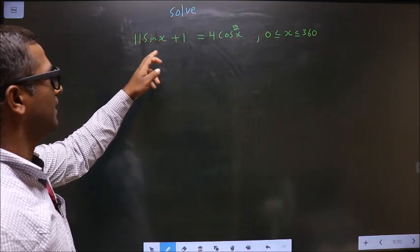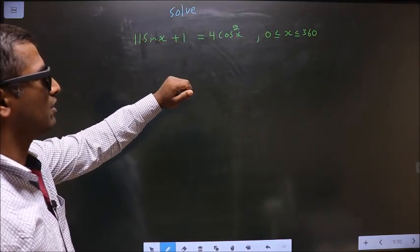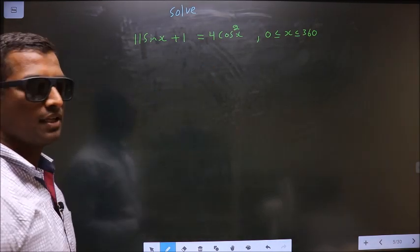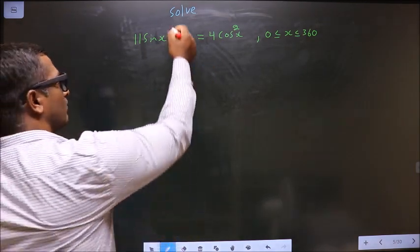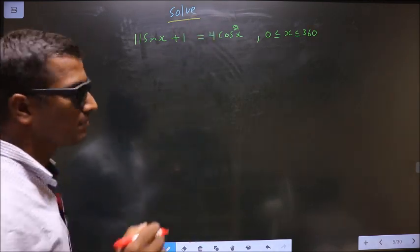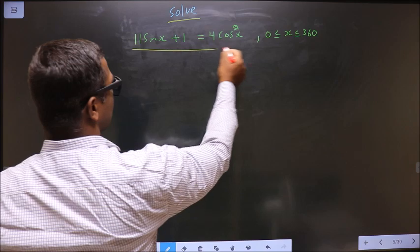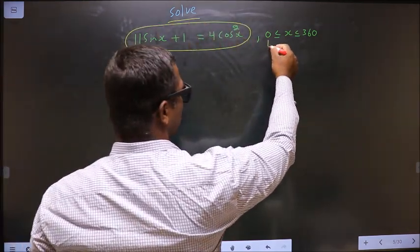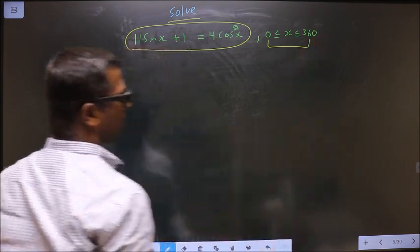Solve 11 sin x plus 1 equal to 4 cos square x where x lies between 0 to 360 degrees. They told you to solve, so you should find the values for x satisfying this equation, and it should lie in this interval 0 to 360 degrees.